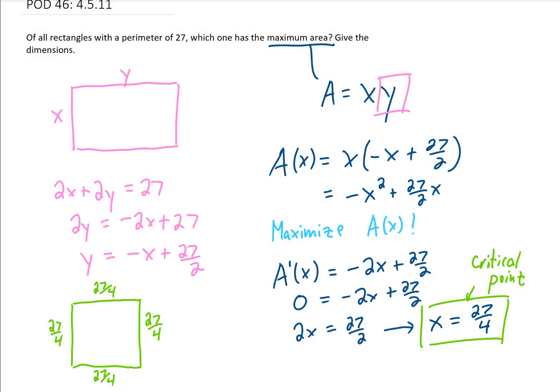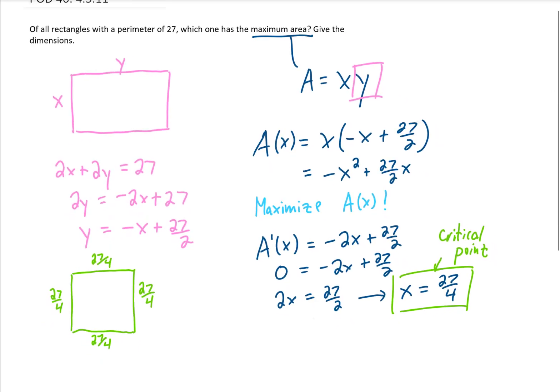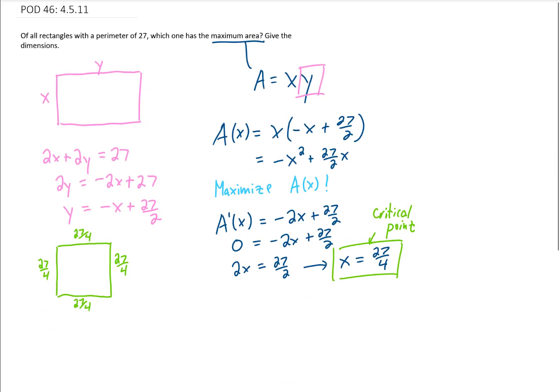And I think this makes sense because 27 fourths added up four times is just going to give us the perimeter that we want of 27. But the question we might be asking is how do we know that this is a maximum area and not a minimum area for this rectangle?